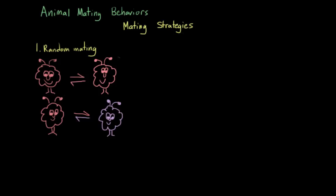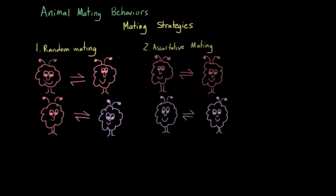There are also a number of non-random mating strategies, or cases where each individual is not equally likely to be chosen as a mate. For example, assortative mating is a strategy where individuals with certain similarities, either in genotypes or phenotypes or genes or physical appearance, tend to mate with each other at a higher frequency.